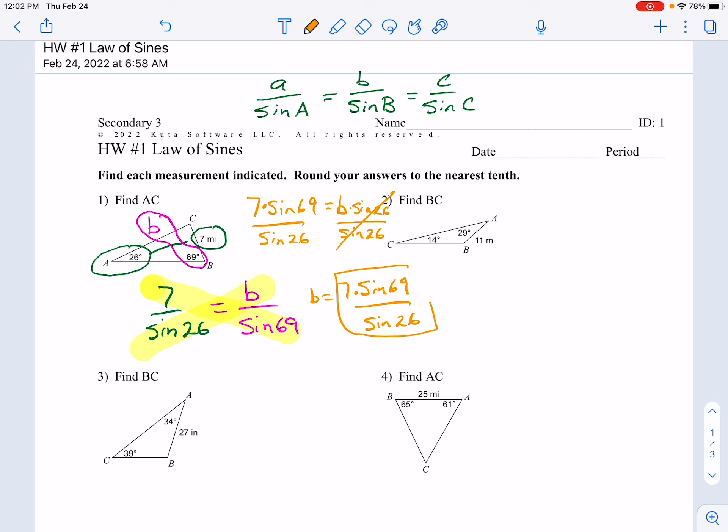So b is equal to 7 times the sine of 69 divided by the sine of 26. We put this in our calculator. Make sure your calculator is set to degrees, not radians. 7 sine 69 divided by the sine of 26, I get 14.9. So on question number one, the answer should be about 14.9.